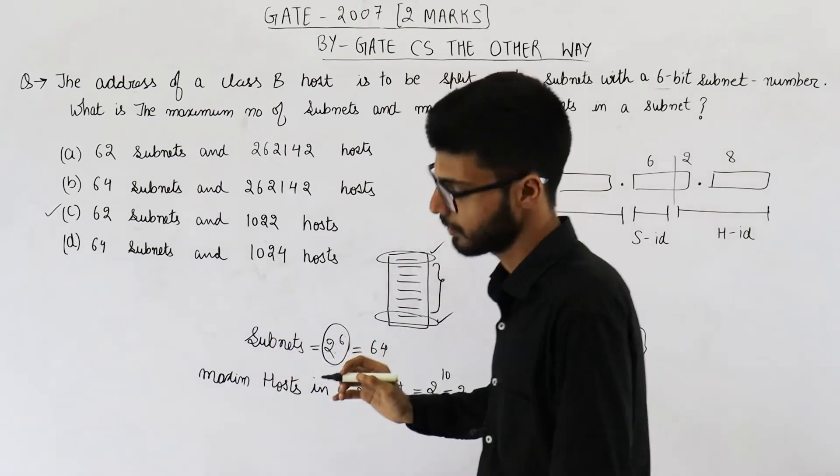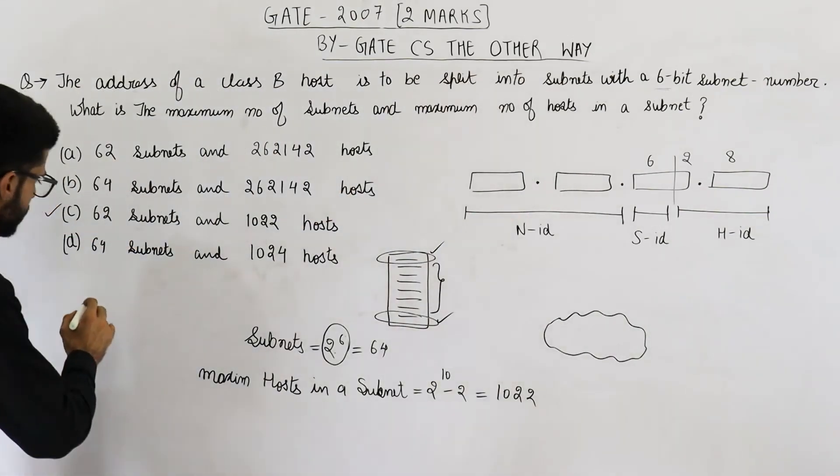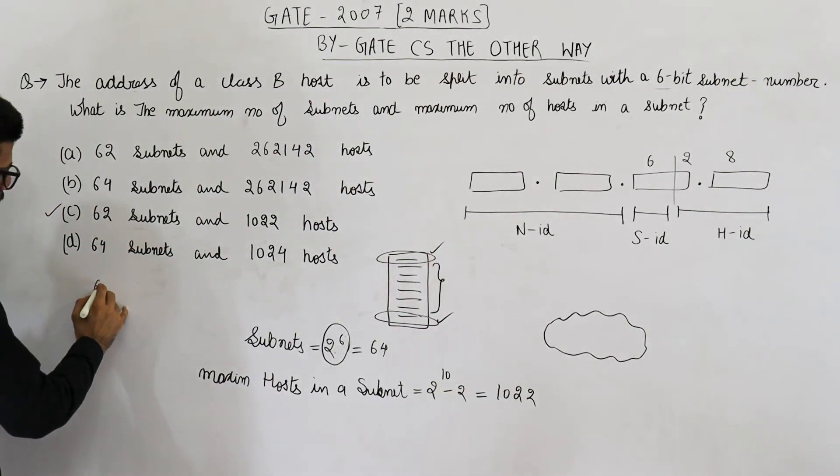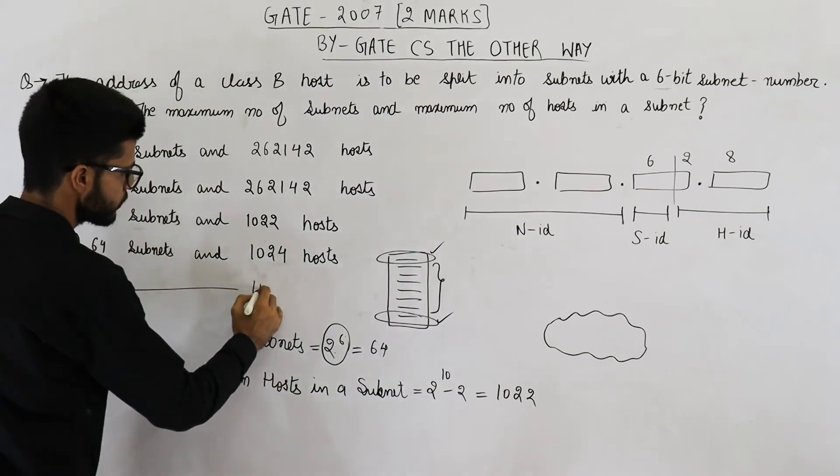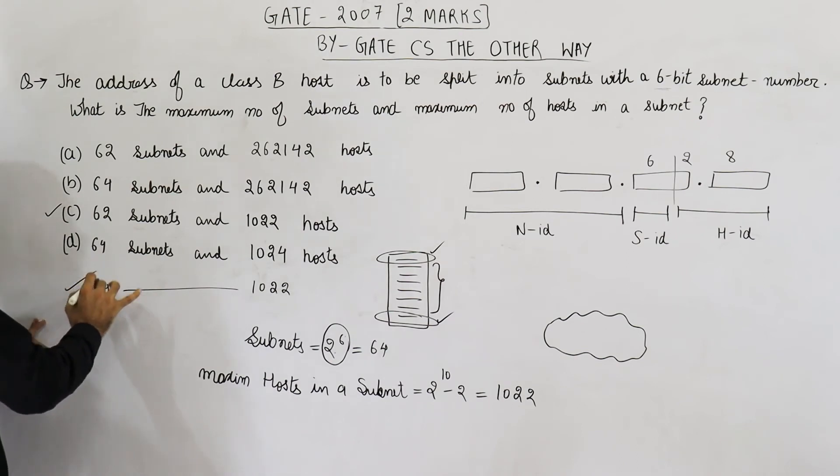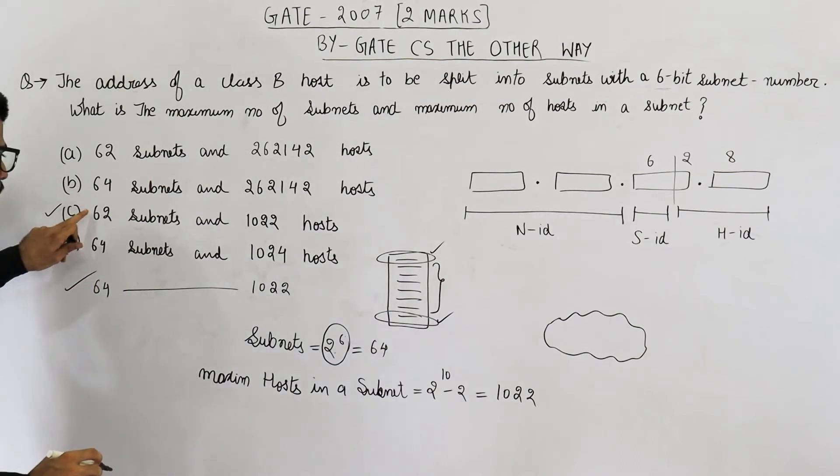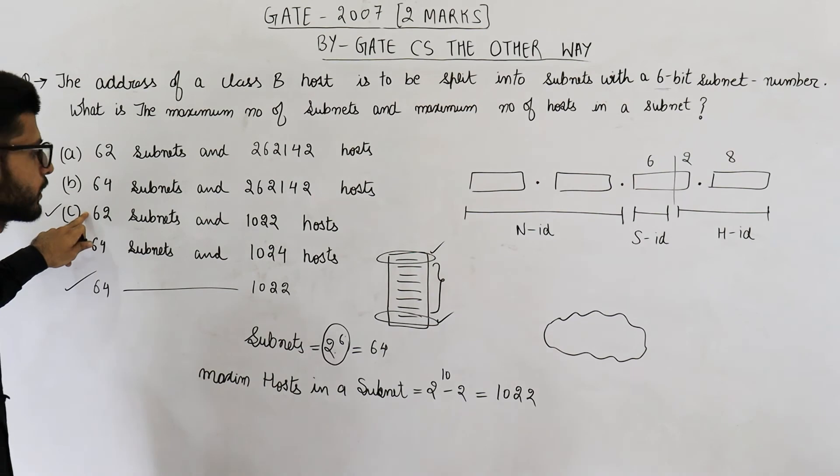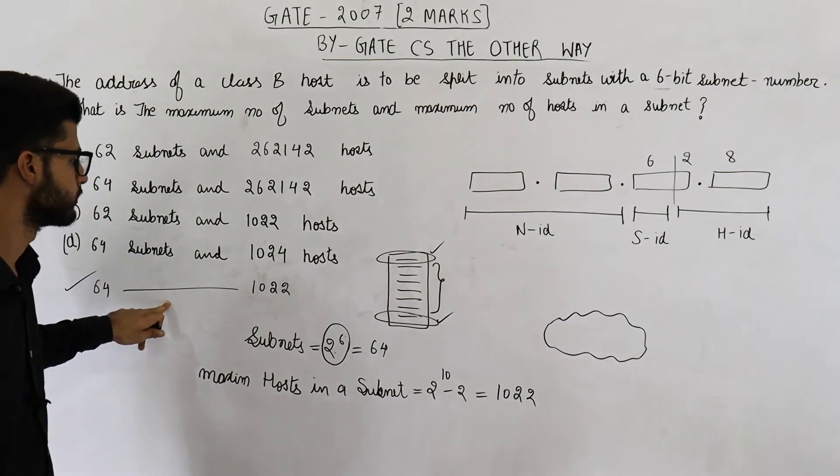But in case, there is some option saying 64 and 1022, suppose you have these 5 options, then just tick this one only. In that case, this one will not be the answer. This is more appropriate.